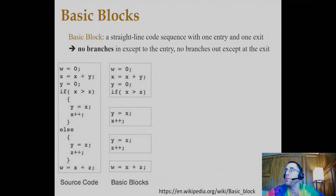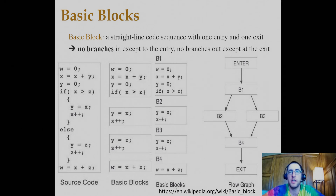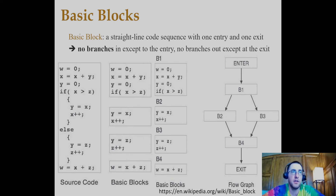A basic block is a straight-line code sequence with one entry and one exit — no branches in except possibly to the entry, and no branches out except possibly at the exit. In a chunk of C code, you can identify basic blocks by looking at the straight-line sequence. You can construct a control flow graph of basic blocks — labeling them B1, B2, B3, B4 — showing entry at B1, a split to B2 or B3 based on an if conditional, then merging back in B4 before exiting. Control flow graphs are heavily used in compilers to optimize program behavior.